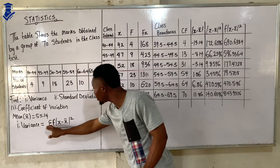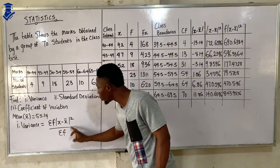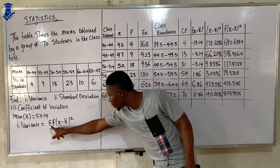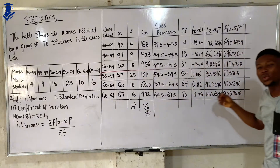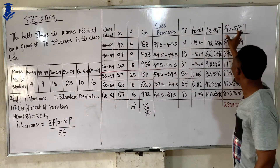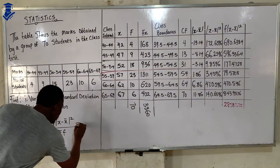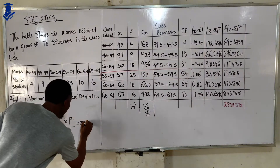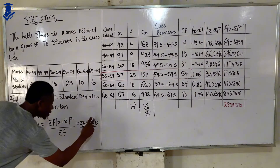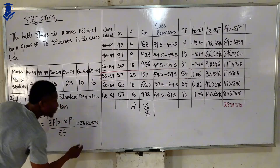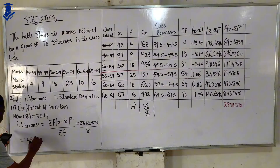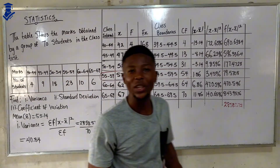The formula for variance requires summation of f times (x minus x-bar) squared, over summation of f. We sum all the f(x minus x-bar)² values to get 2858.572. Dividing by summation f, which is 70, gives us our variance: 40.84.